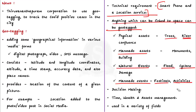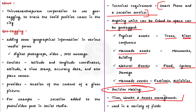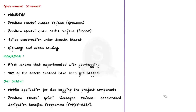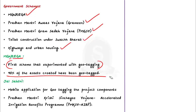Geotagging is used in decision-making, time and asset management, social media, public works, and various government schemes. It is used in MGNREGA (Mahatma Gandhi National Rural Employment Guarantee Act) — where about 90% of assets have been geotagged — Pradhan Mantri Awas Yojana Grameen, Pradhan Mantri Gram Sadak Yojana, toilet construction under Swachh Bharat, building of highways, and urban housing. NREGA was the first scheme to experiment with geotagging. The Ministry of Jalshakti has also launched a mobile application for geotagging projects under Pradhan Mantri Krishi Sinchayee Yojana.